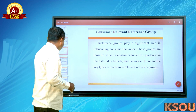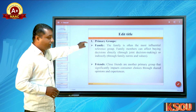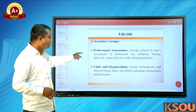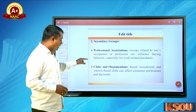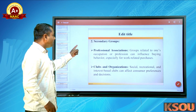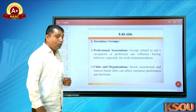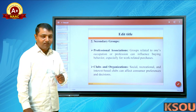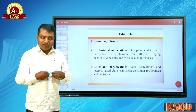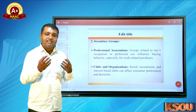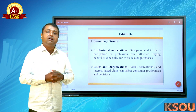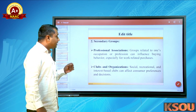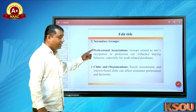Consumer relevant reference groups: the first is primary groups, which include family and friends. Secondary groups include professional associations, clubs, and organizations. Professional associations — groups related to one's occupation or profession — can influence buying behavior. For example, where I am working, my colleagues will influence me in buying a particular product.